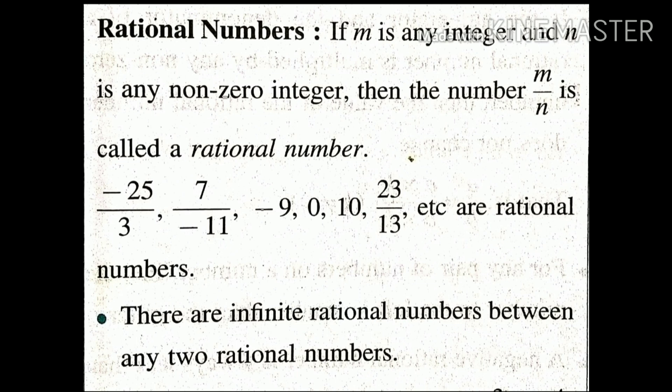Second is 7 upon minus 11. Third example is minus 9. You will think that there is no denominator in the case of minus 9, but actually it is minus 9 upon 1. The net value is minus 9 because minus 9 divided by 1 you will get minus 9.